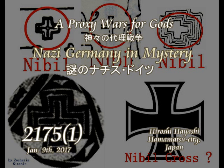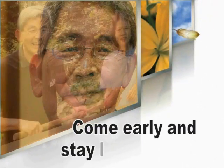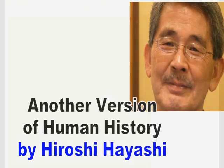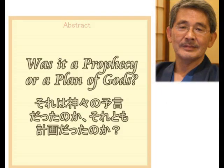第二次世界大戦は、一般的に1939年9月1日にナチスドイツがポーランドに侵攻したことで始まったとされています。それはファティマの予言で予告されていたことでした。